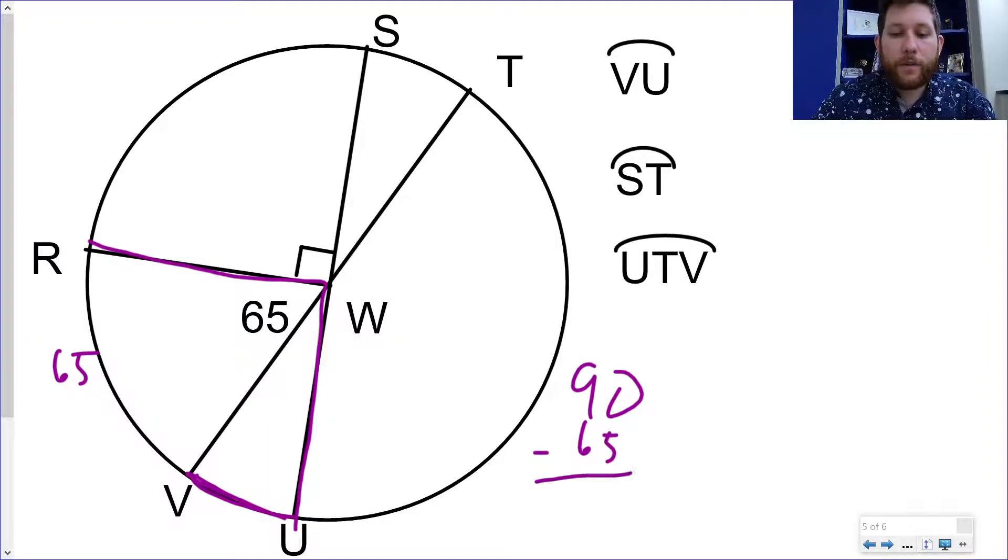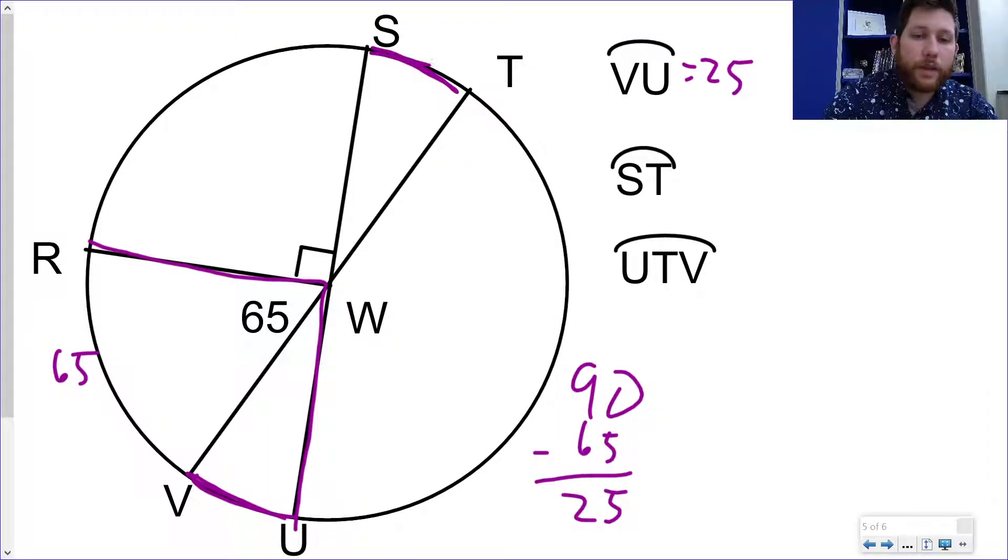Now, if you're not really sure about all that, what you could do is think about SV and find that and then subtract from 180. You could also do it that way as well. But in this case, if I know that that's 90, it's quarter of a circle, I can subtract from 90. Up next, they ask for ST. Now, how would I solve for ST? Let me show you a trick.